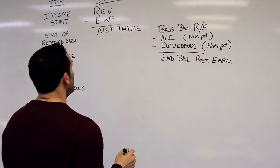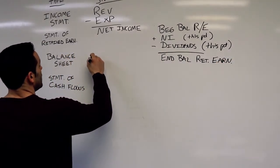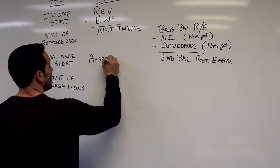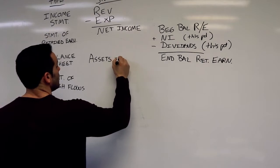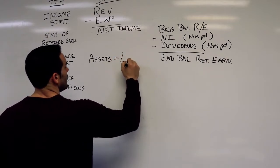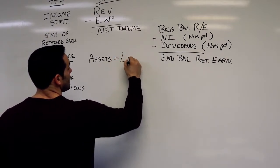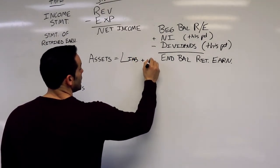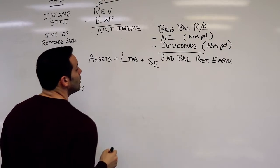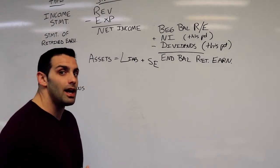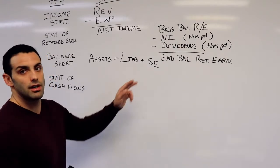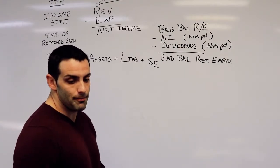The balance sheet: we have our assets plus liabilities plus shareholders equity or owners equity. I use them interchangeably. Most textbooks I think have shareholders equity these days.